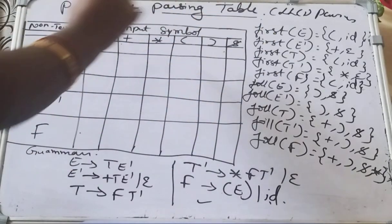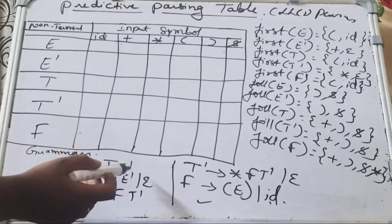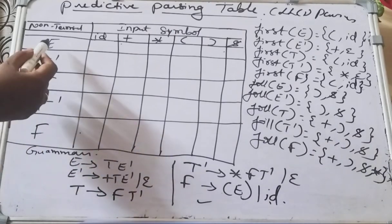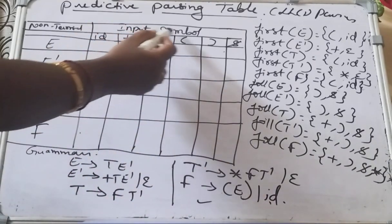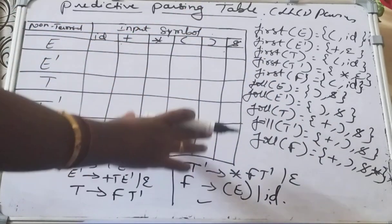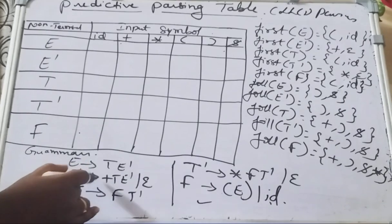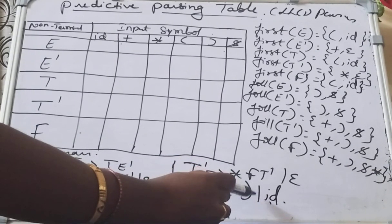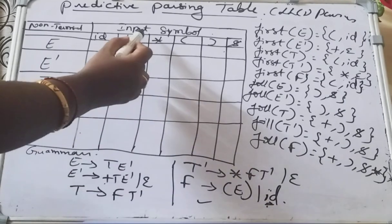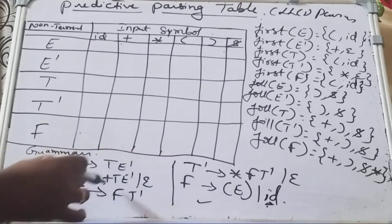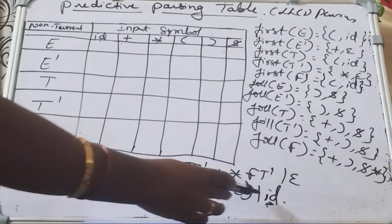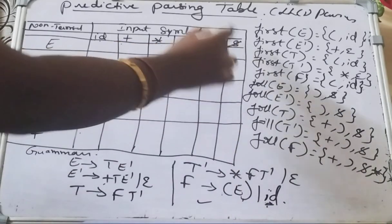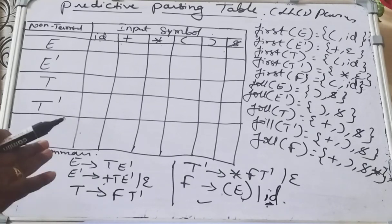Now, how to fill this LL(1) parsing table? This grammar has five non-terminal symbols. Draw one column that includes all non-terminal symbols, and write the input symbols on the right-hand side. The input symbols are the terminal symbols used in the grammar: plus, star, open parenthesis, close parenthesis, and id. Also include dollar by default for all LL(1) parsing tables.